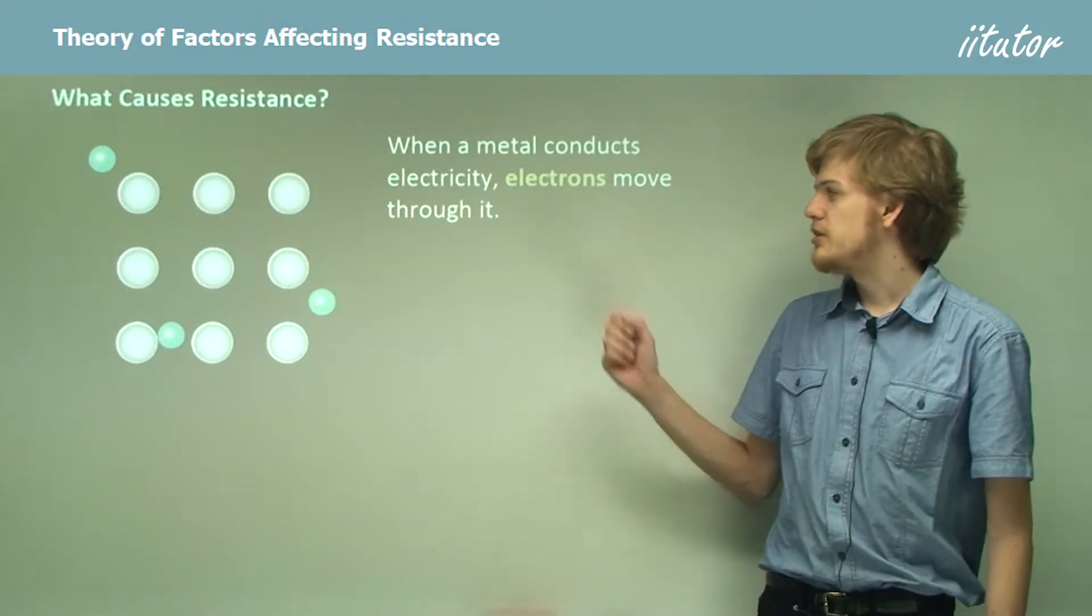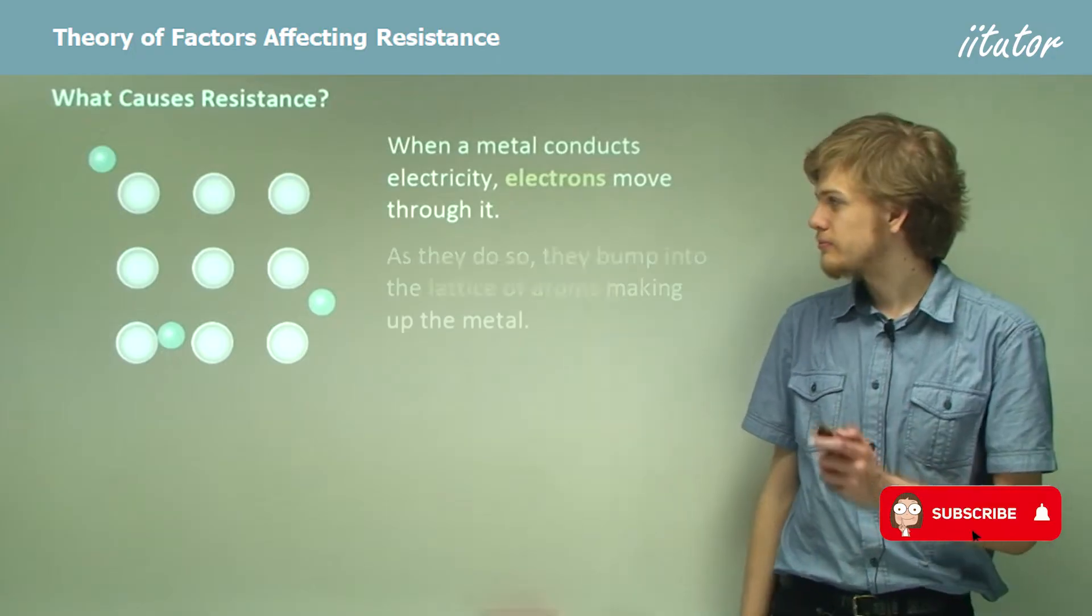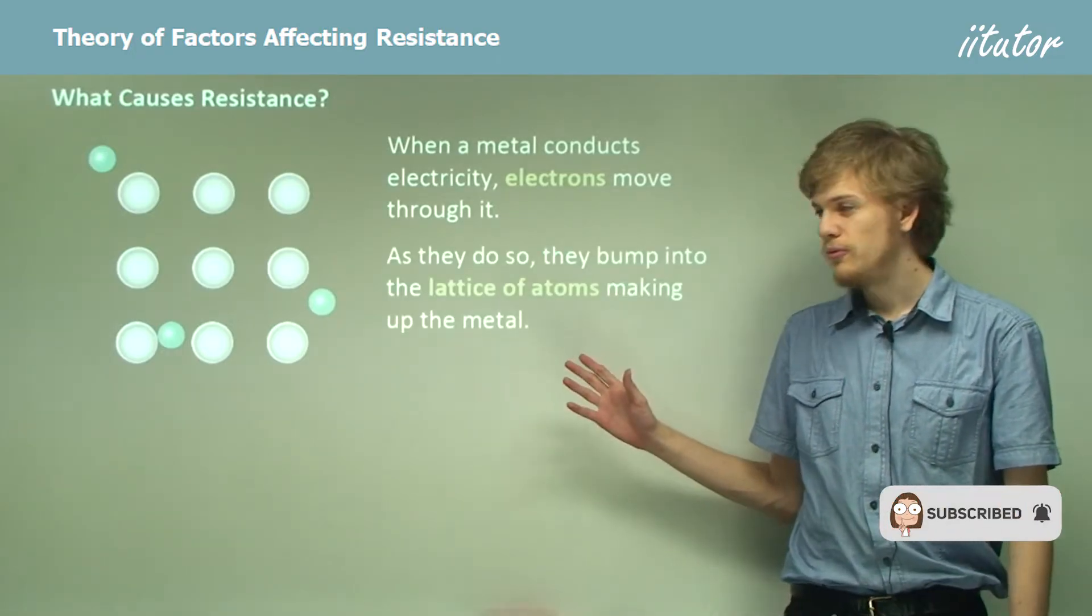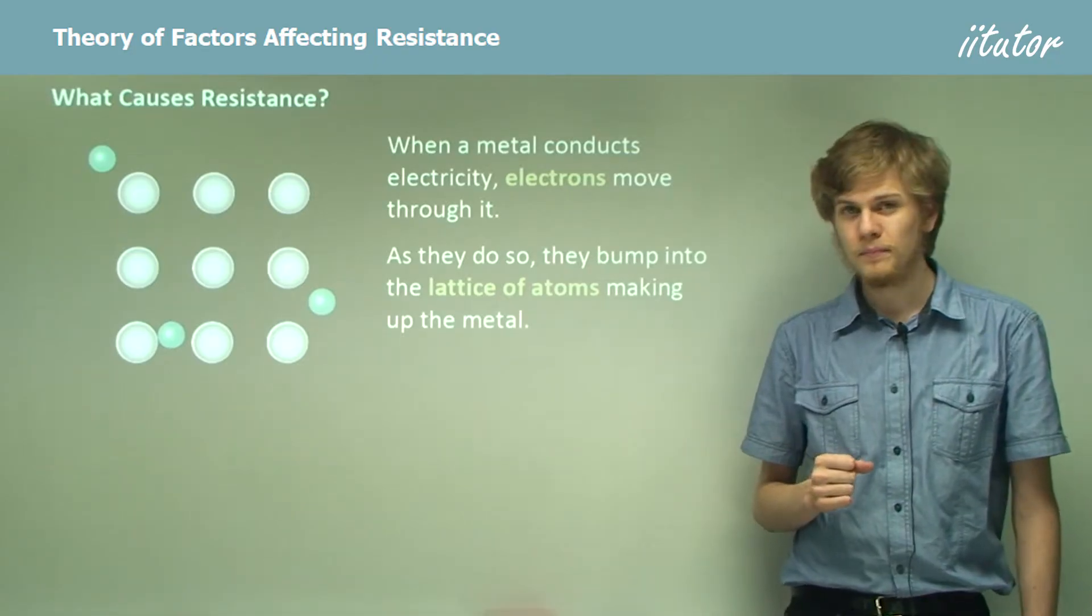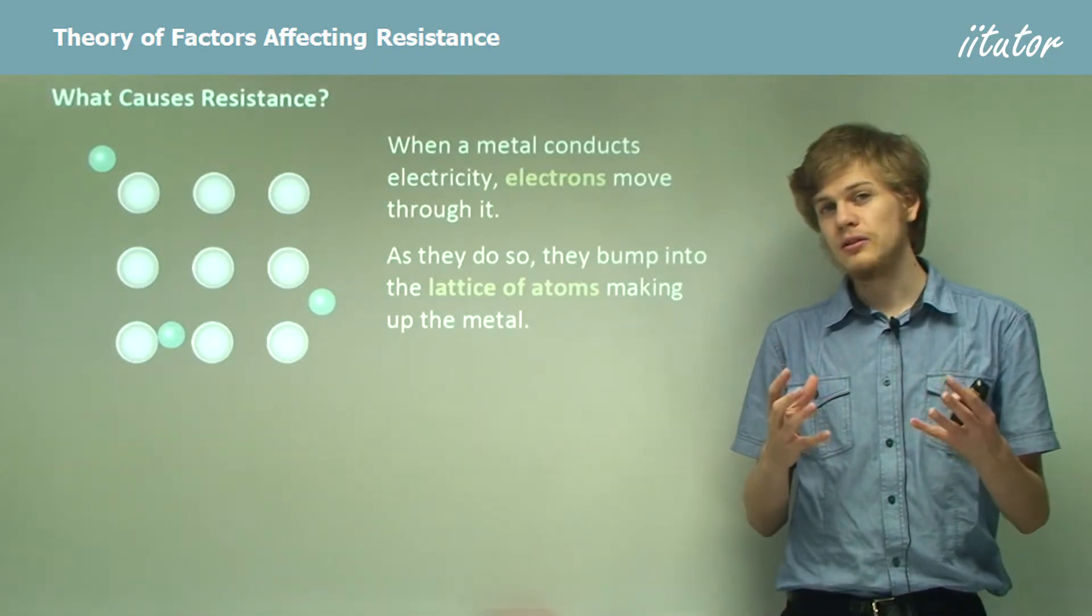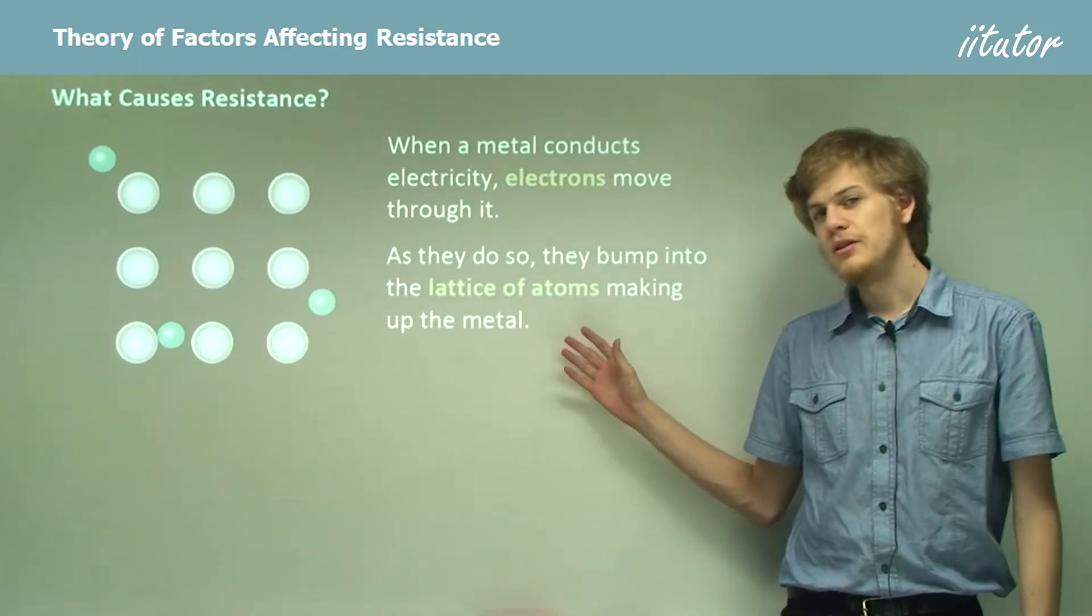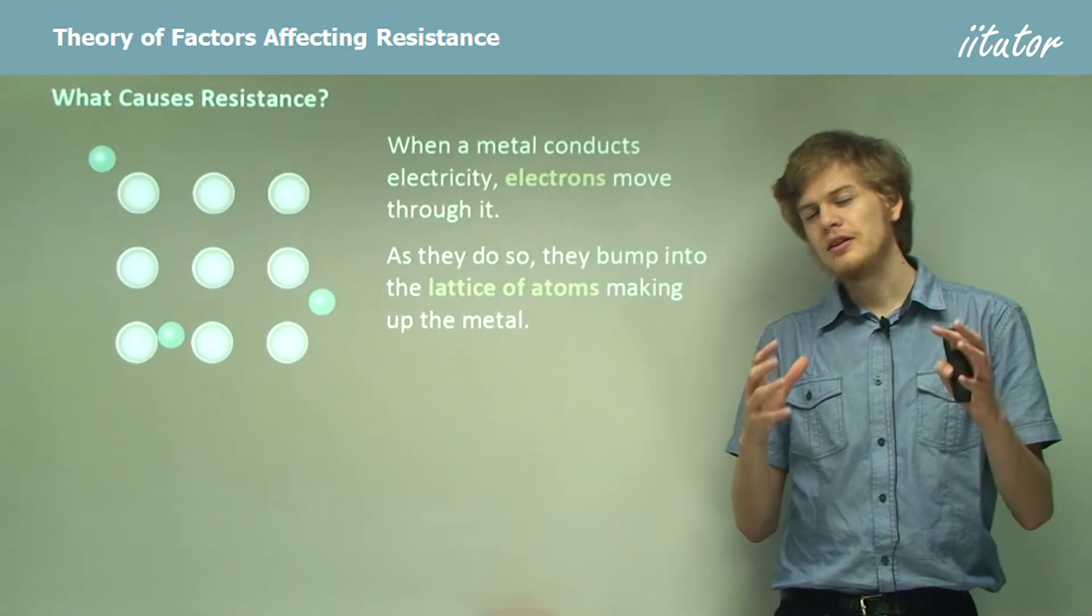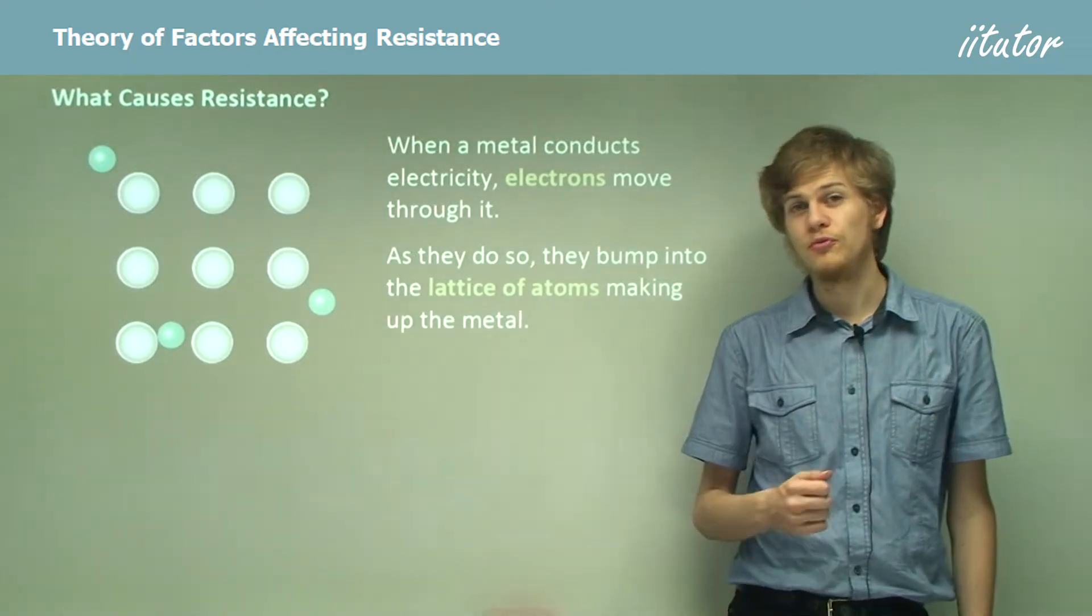So when a metal conducts electricity, electrons move through it as the charge carriers. Now as they do so, they bump into the lattice of atoms that makes up the metal. Remember that metals, like all materials, are made out of atoms, and because the metal is a solid, the metal atoms are pretty much fixed in place, although the electrons can flow through them freely.